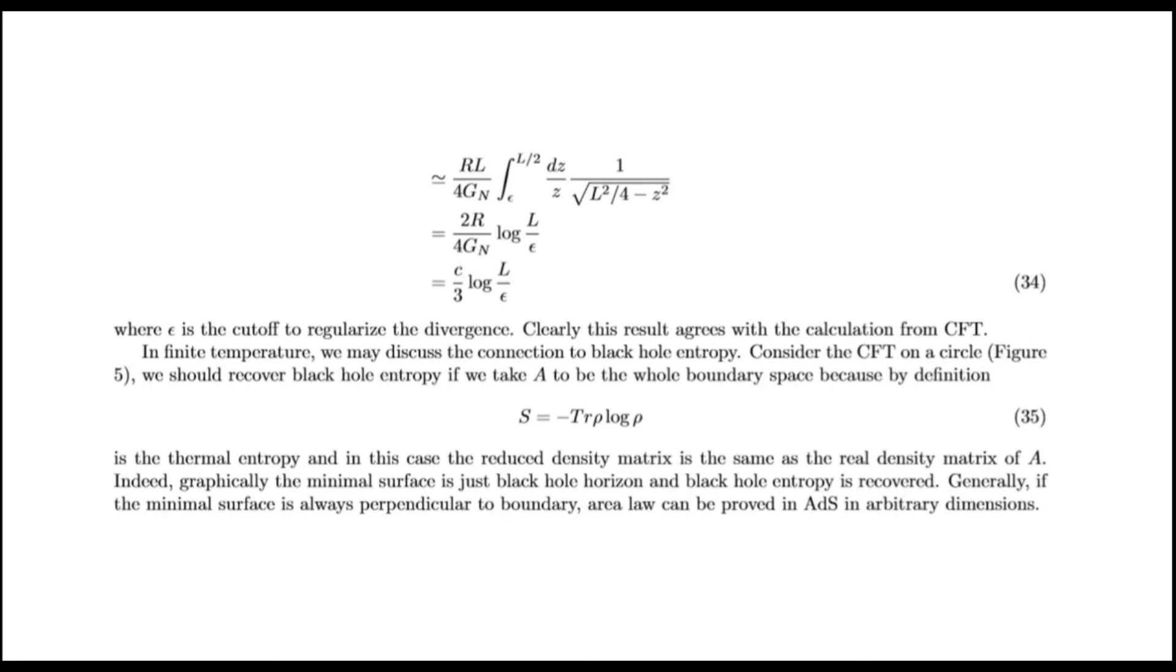In finite temperature, we may discuss the connection to black hole entropy. Consider the CFT on the circle. We should recover black hole entropy as we take A to be the whole boundary space circle by definition. As the thermal entropy, and in this case, the reduced density matrix is the same as the thermal density matrix of A. Indeed, graphically, the minimal surface is just black hole horizon and black hole entropy is recovered. Generally, if the minimal surface is always perpendicular to boundary, area law can be proved in AdS in arbitrary dimensions.